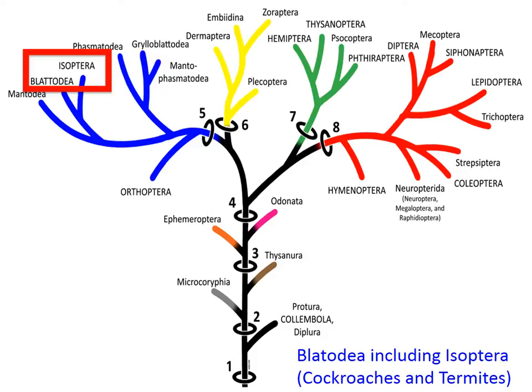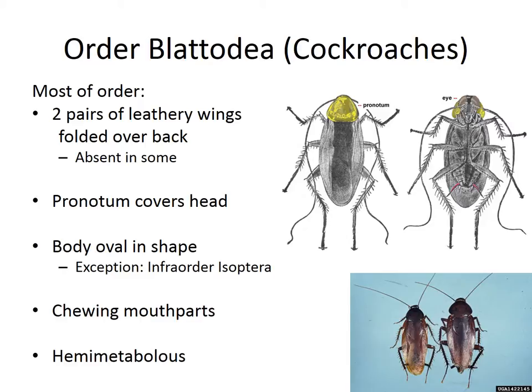The next order we're going to talk about is Blattodea, and this includes the former order Isoptera — that is, cockroaches and termites, respectively. The order Blattodea, or cockroaches: most of this order has two pairs of leathery wings, though in some groups these wings are secondarily lost. Their pronotum generally forms a kind of shield-like structure that at least partially covers their head from above. The body is typically oval in shape, though for the infraorder Isoptera, or termites, these characters don't really fit the bill quite so much.